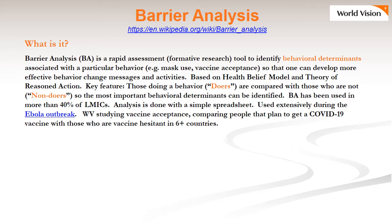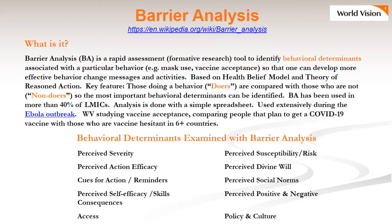Barrier analysis has now been used in about 40% of lower and middle-income countries and analysis is done with a simple spreadsheet. We used it extensively during the Ebola outbreak and World Vision is studying vaccine acceptance, comparing people that plan to get a COVID-19 vaccine with those who are vaccine hesitant in more than six countries. These are the main determinants that are explored in these studies, things like perceived social norms — whether you think that people important to you approve of the behavior — but also perceived severity, whether you think that COVID-19 is a dangerous disease or not. You'll learn about each of these determinants in detail during this workshop.